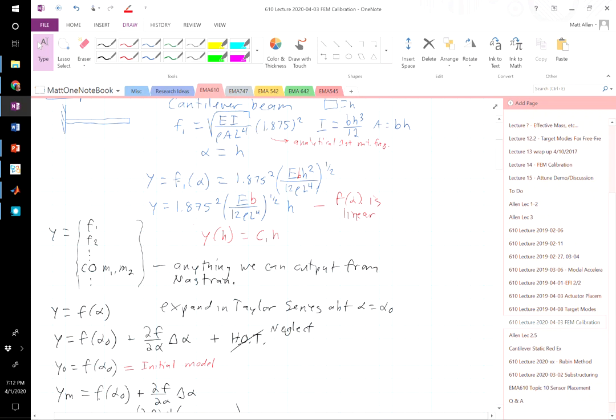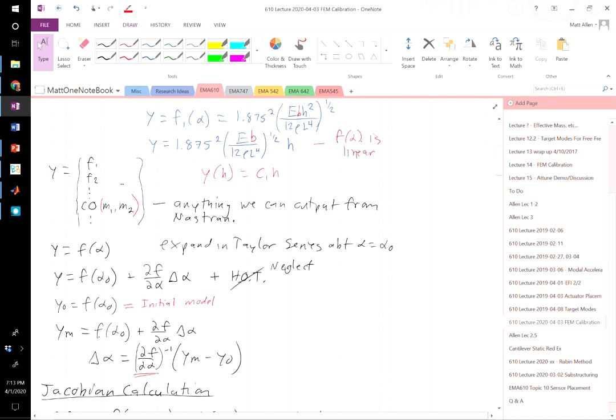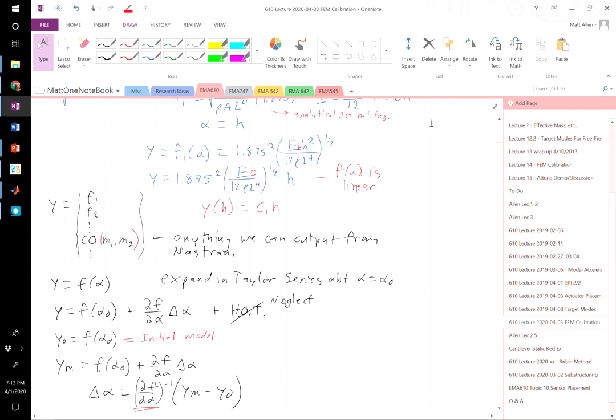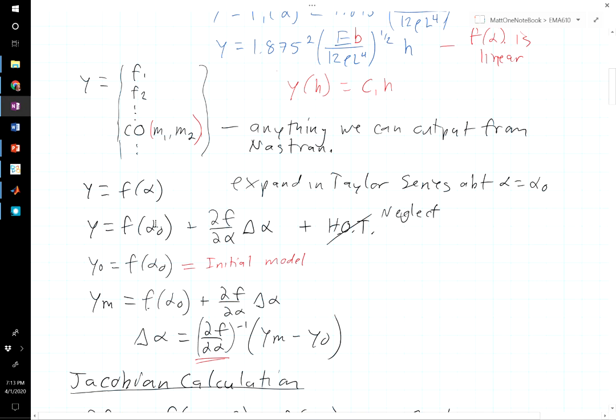In a more general case though, we have many different natural frequencies that we're trying to match. And then we might also have the cross-orthogonality, which is a function between two modes, and we might have another term for the cross-orthogonality between a different pair of modes, and so on. So we might have a lot of states that we're trying to match. In the most general case, what we'll do is we will expand this in a Taylor series about the nominal model. If we do that, we get the nominal model and then the Jacobian with respect to the parameters. In this case, we have a vector of parameters, so this will actually be a matrix. Usually we neglect any quadratic or higher order terms.